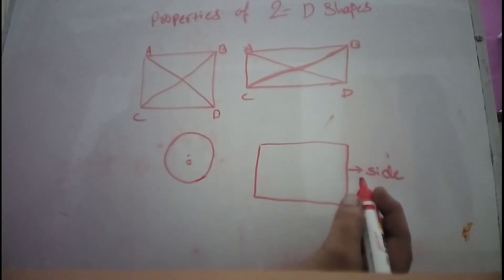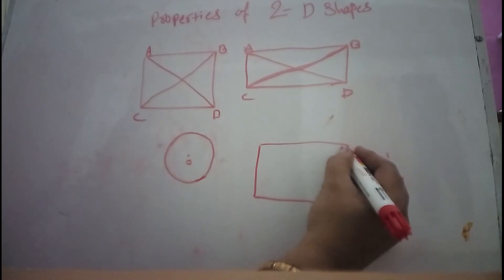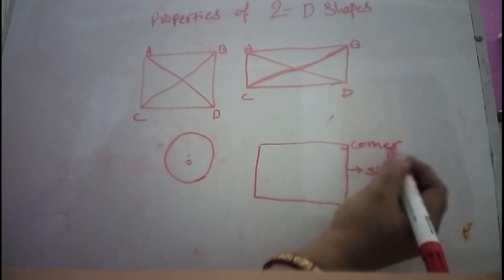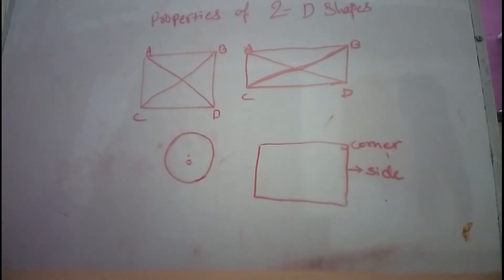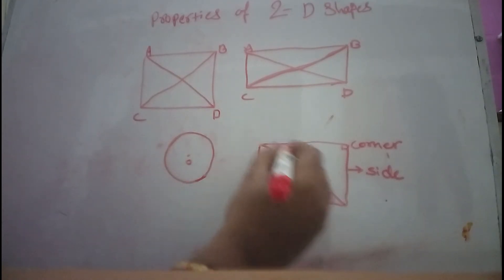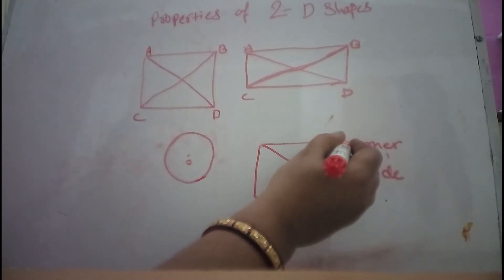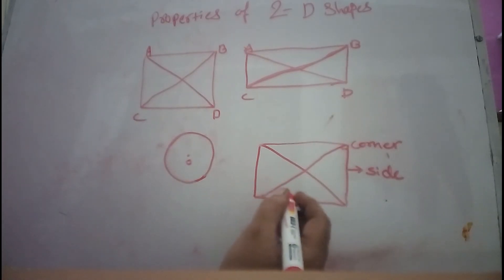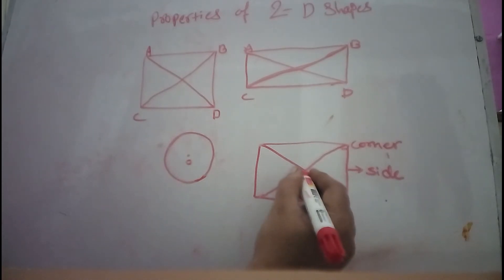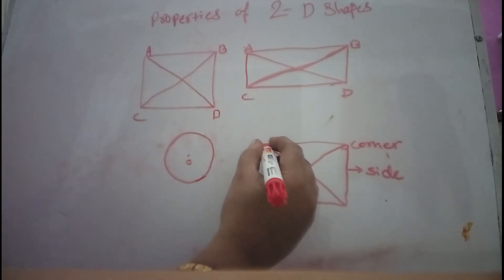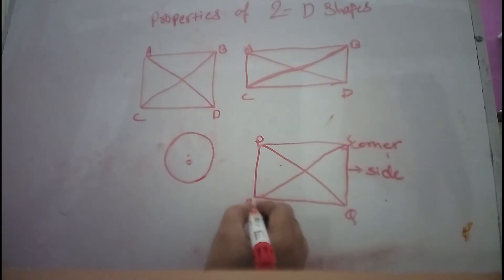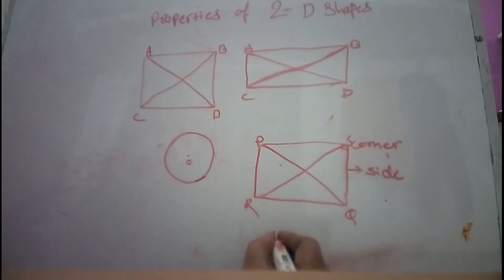The point where two sides meet is known as its corner. The line that joins opposite corners of a shape is known as its diagonal. Segment PQ is the diagonal.